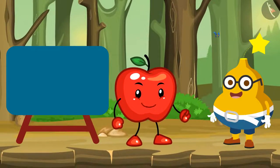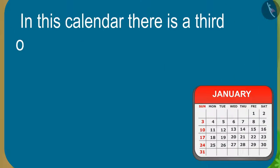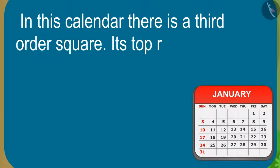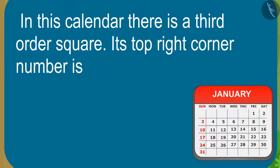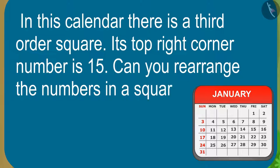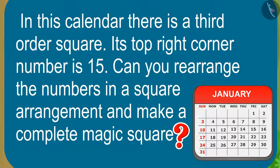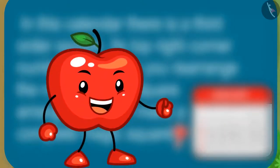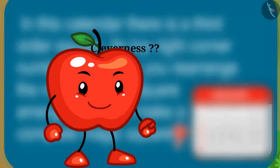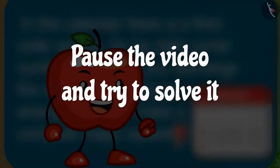The puzzle is: in this calendar there is a third order square whose top right corner number is 15. Can you rearrange the numbers in a square arrangement and make a complete magic square? Students, do you also want to test your cleverness? Then you can pause the video and try to solve the puzzle.